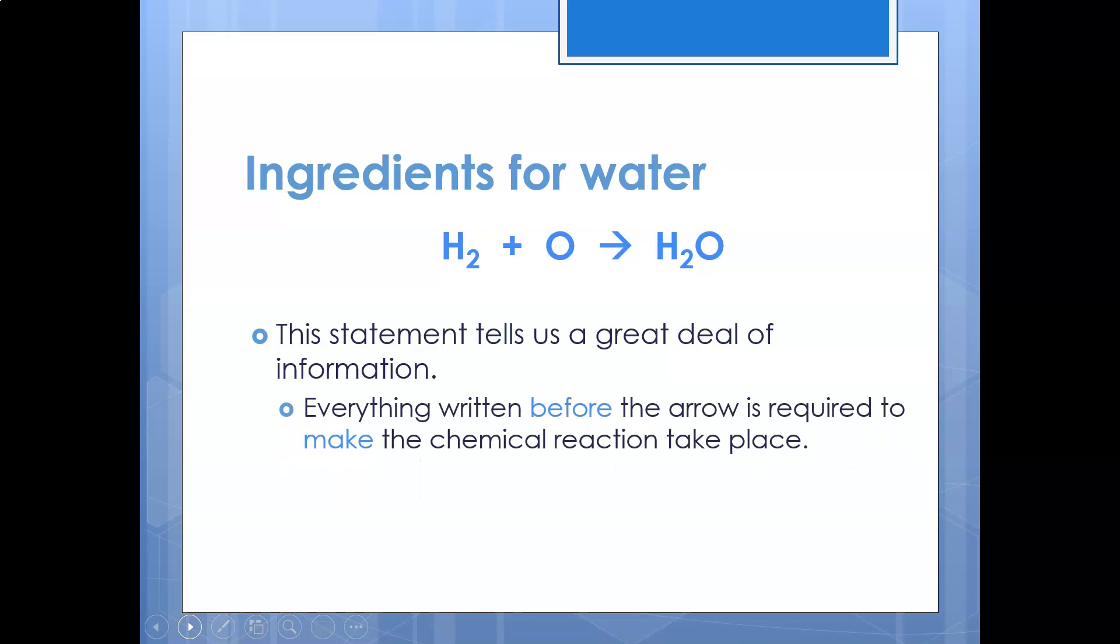This equation we've got here is telling us quite a lot. It's telling us how many atoms of each of the elements we've got, so it's telling us we've got two hydrogens, one oxygen. It's telling us we add them together and the arrow tells us what our product is. It's telling us that a reaction has taken place.